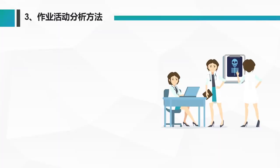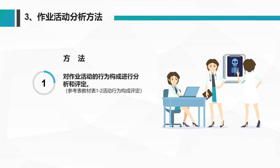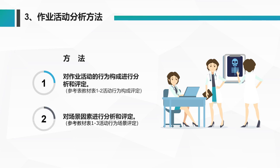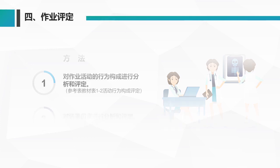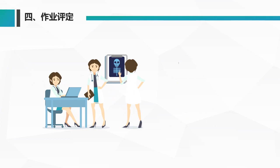作业活动的分析方法有两种：第一种，对作业活动的行为构成进行分析和评定，可参考教材中的表1-2，即活动行为构成的评定表；第二种，对场景因素进行分析和评定，可参考教材中的表1-3，即活动场景的评定表。